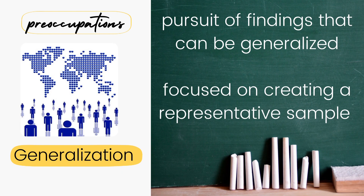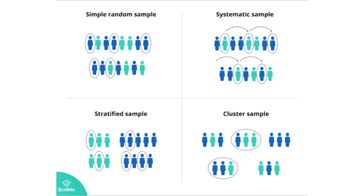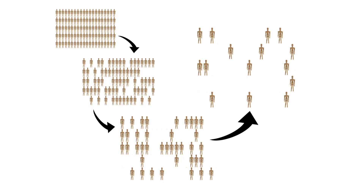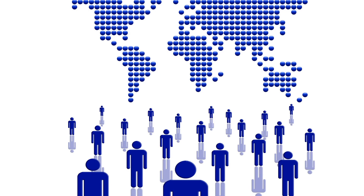Now let's go to the third major preoccupation, which is generalization. It is the pursuit of findings that can be generalized, focusing on creating a representative sample. There are standardized formulas and computations on how to get the sample, and sampling techniques that were already discussed in statistics and probability subjects. Researchers are very concerned with creating a representative sample size — the more the population is represented, the more the findings can be generalized and acceptable for all.